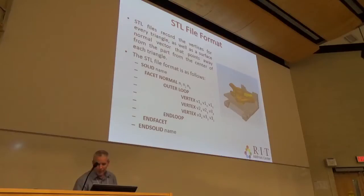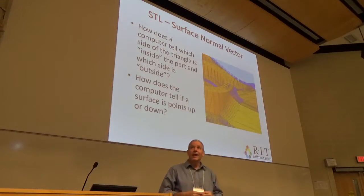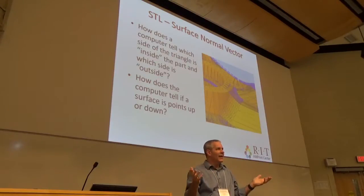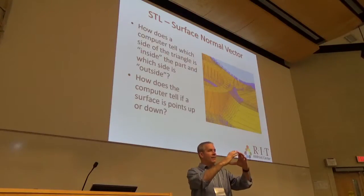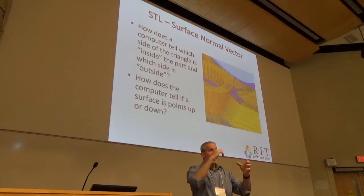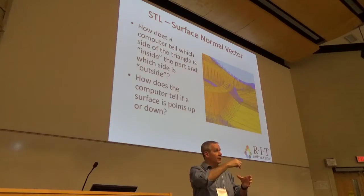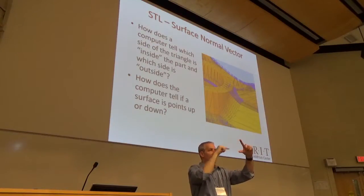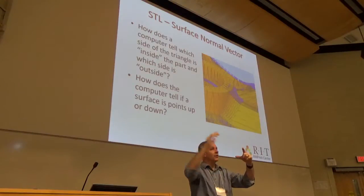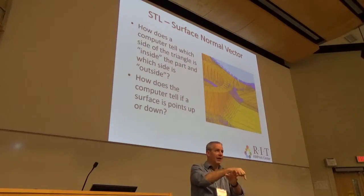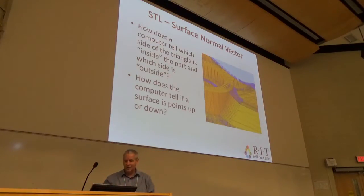The STL file also contains a surface normal vector pointing away from the part. You might ask why. When we get into slicing — imagine a doughnut: if you slice it in half, there's a larger diameter circle and a smaller diameter circle. Computationally, when generating a toolpath, you have to know what's inside and what's outside. The surface normal vector gives you that information. By convention, whatever direction that vector points is outside the part — and you print material on the other side, inside the surfaces of the part.